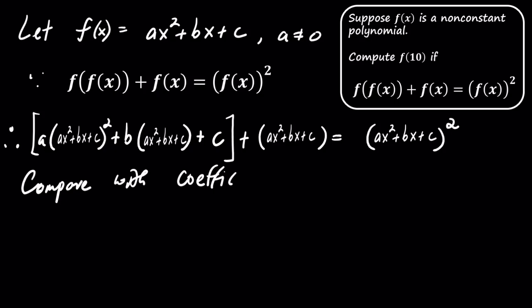Let's carefully compare the coefficients from both sides. First, by comparing the coefficients of x to the fourth power, we find that a squared equals a. This implies a equals 1 because a cannot be 0.